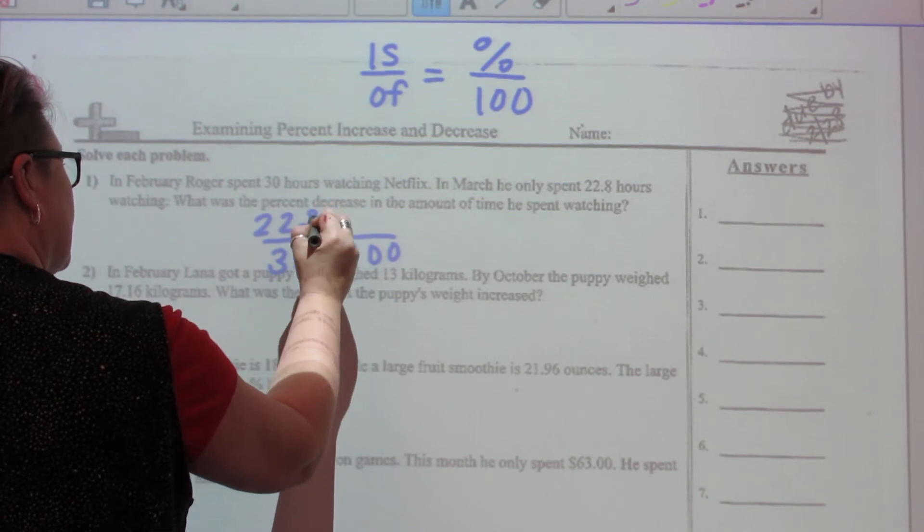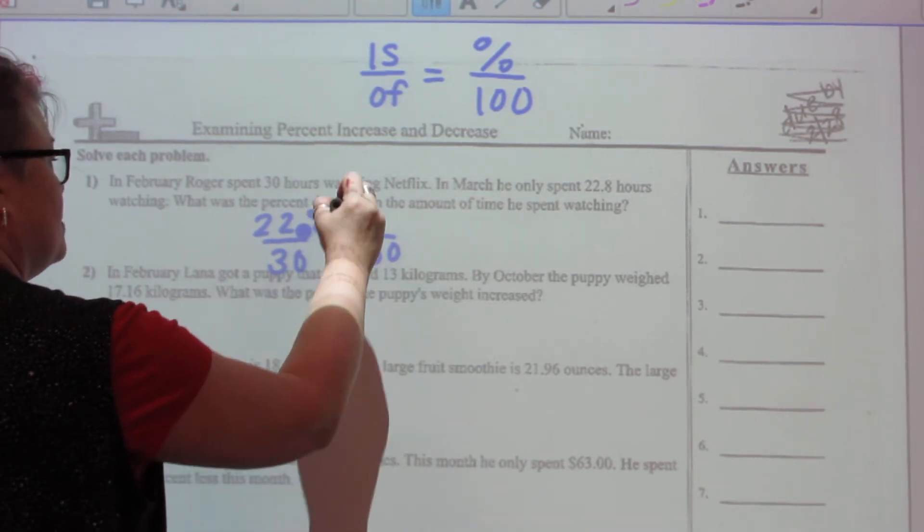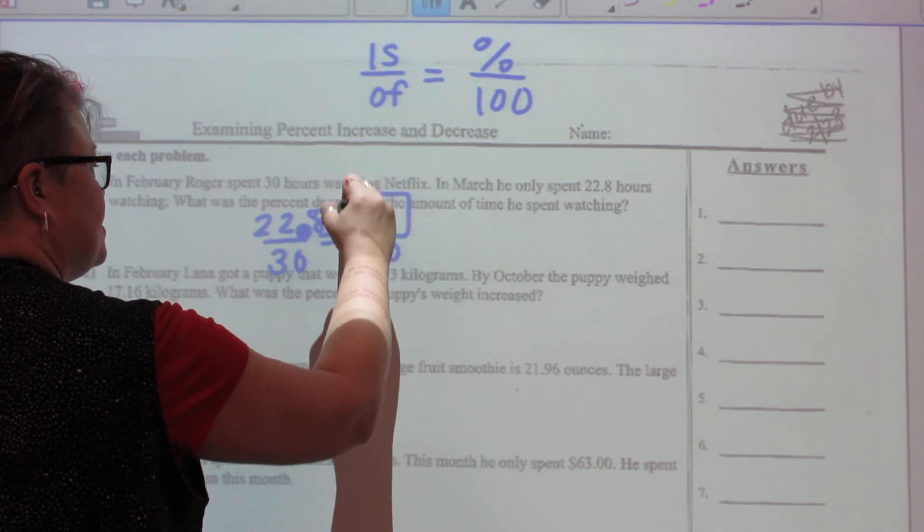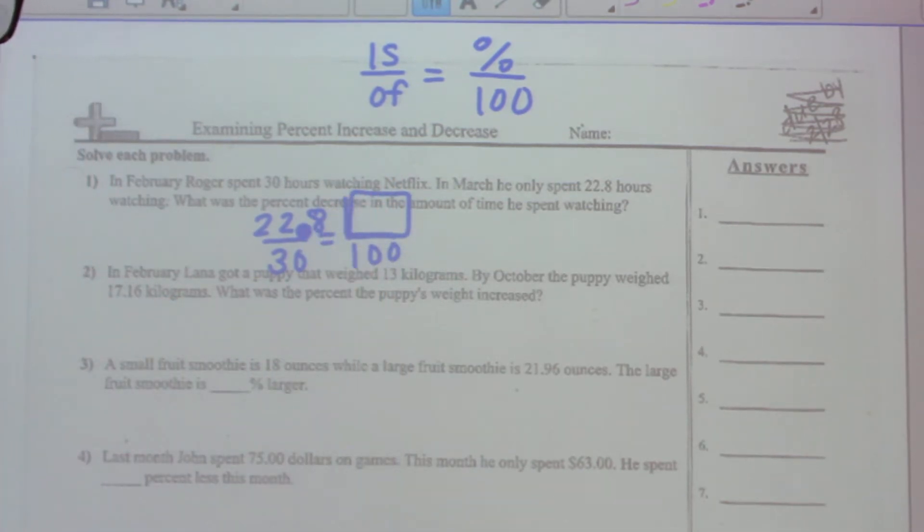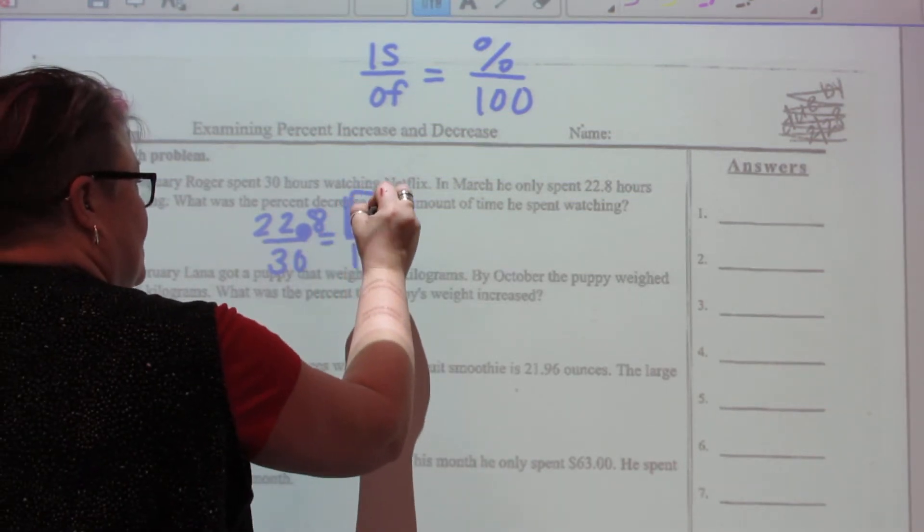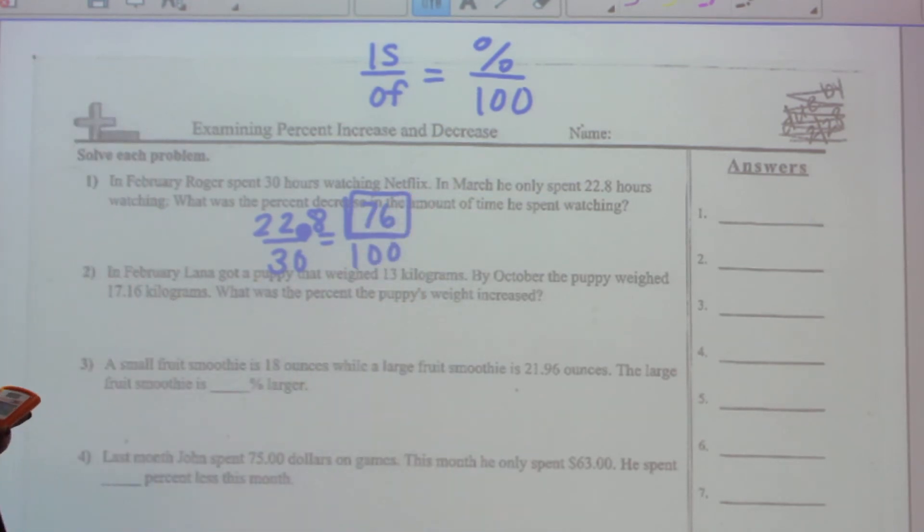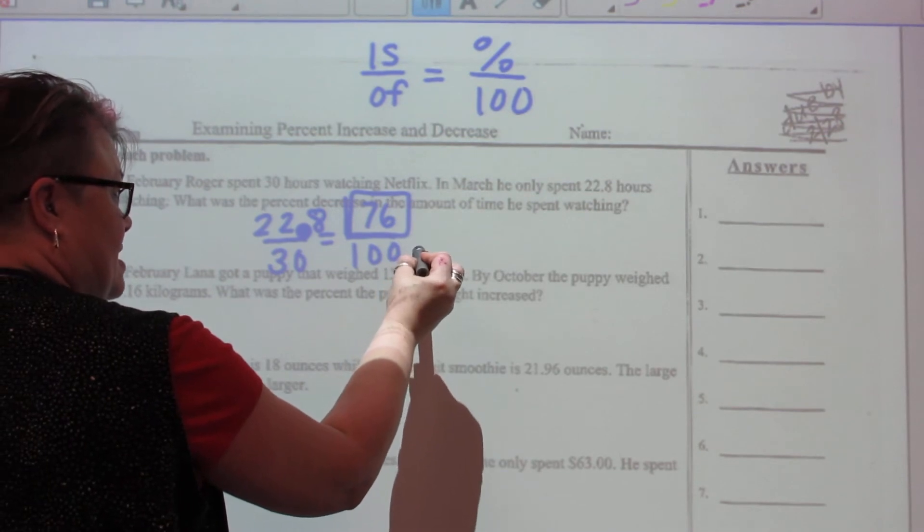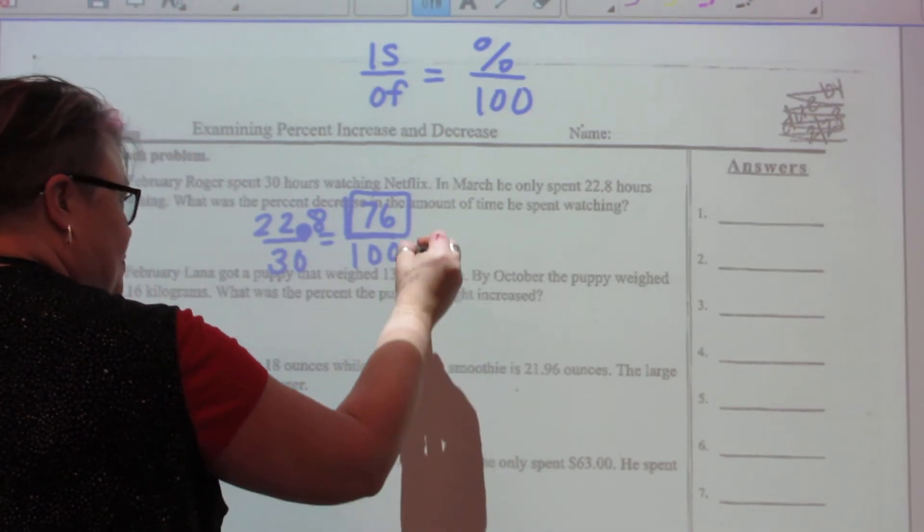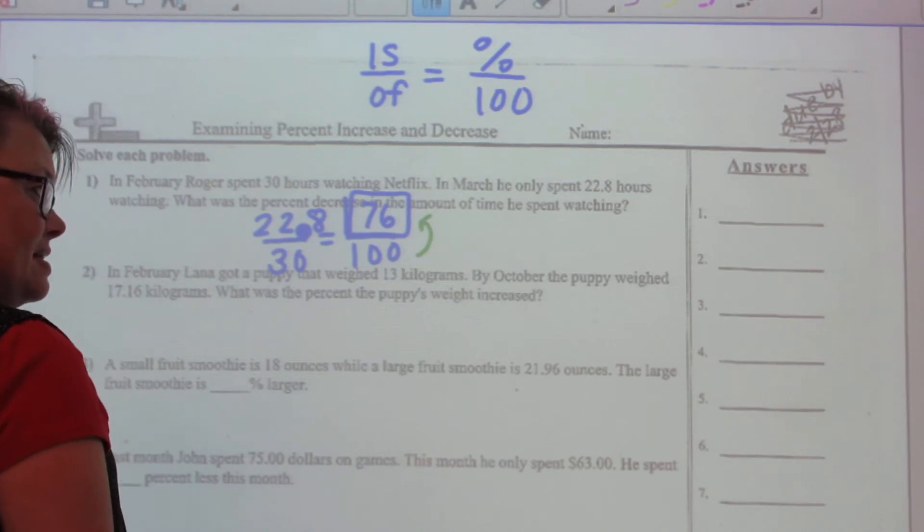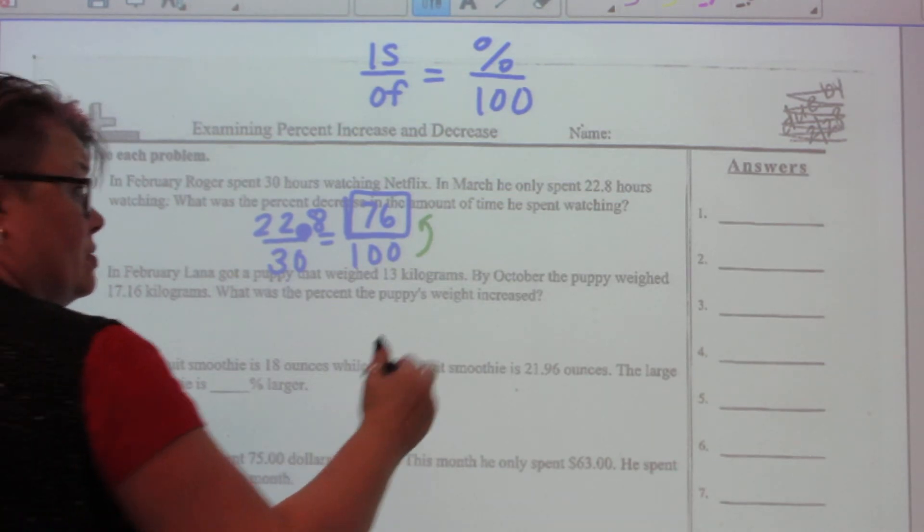Okay, so they want to know what the percent decrease is. So let's get our calculators out and type in 22.8 times 100 divided by 30, and you get 76. But I don't want 76 as my answer. It asked me how much it decreased, and if I go from 100 to 76, how much did I go down by?